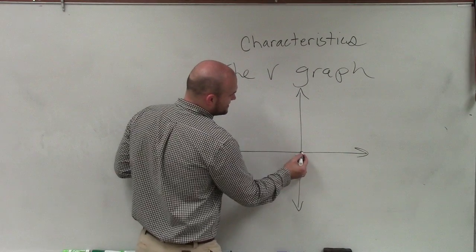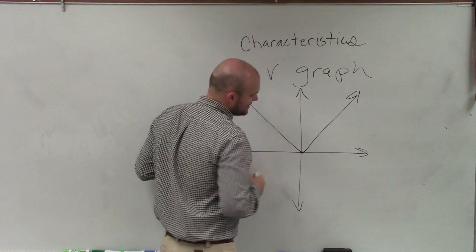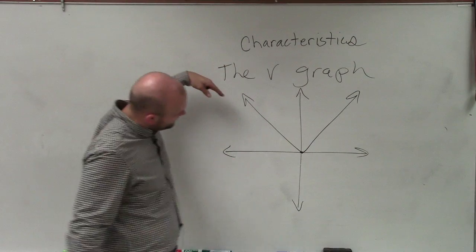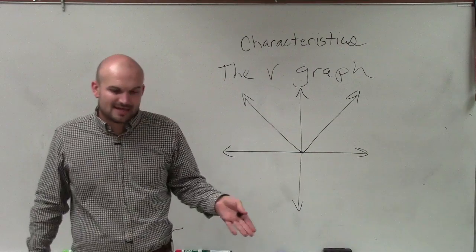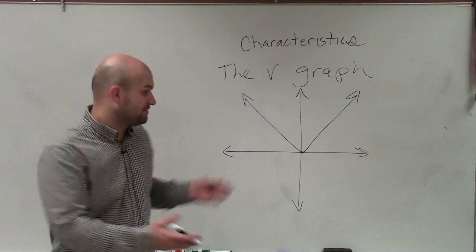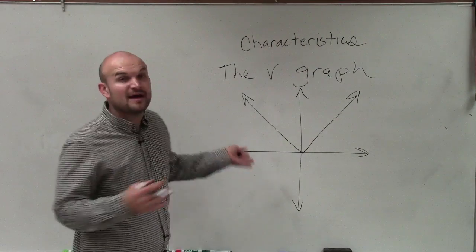And there's a couple important things for us to understand about this so-called V-graph. First of all, you can see that the V has a point on the bottom. It has a minimum, right? And this is going to have a minimum or a maximum. Depends if it opens up, there's a minimum. If we have to reflect and it opens down, then it would have a maximum.